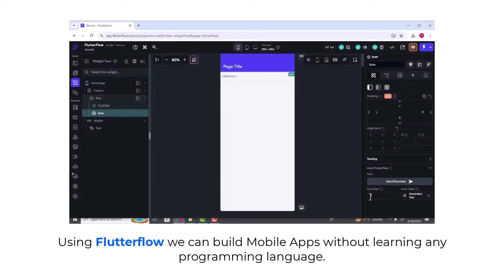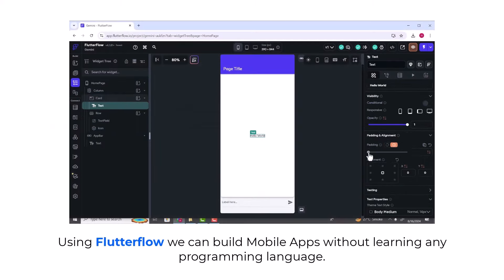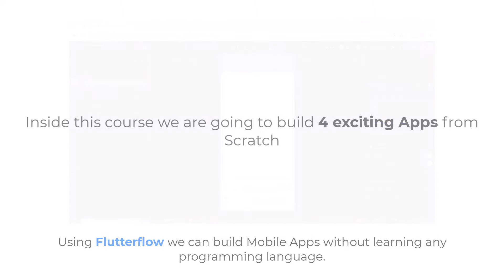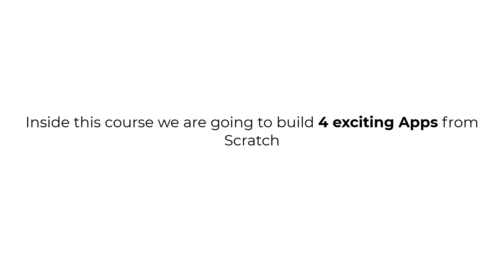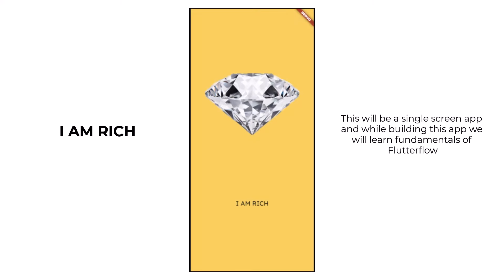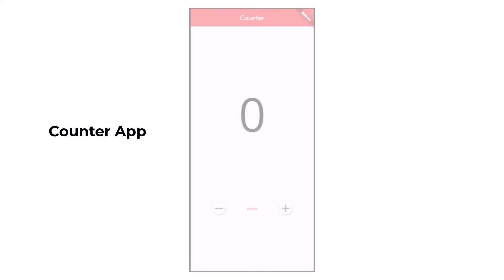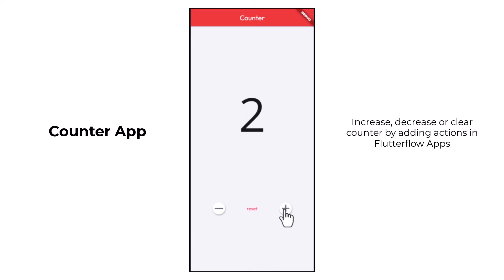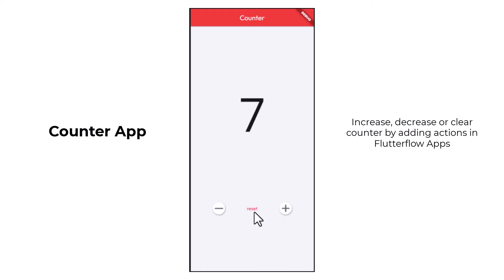FlutterFlow is a platform using which we can build mobile applications without learning any programming language. Inside this course we are going to build 4 different applications in FlutterFlow from scratch. Firstly we are going to build a simple application called I Am Rich. This will be a single screen application, and while building it we will cover some basic introduction of FlutterFlow. After that we are going to build our counter application, where a user can increase the counter value, decrease it, and also clear it. While building this application you will learn to add and handle actions in FlutterFlow applications.